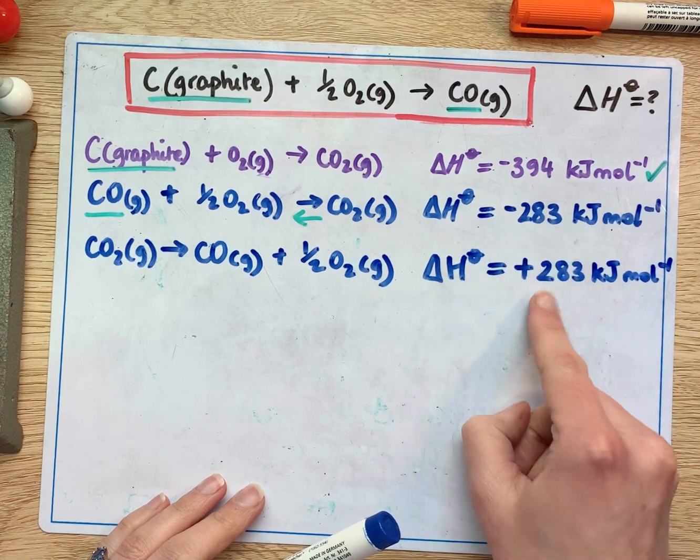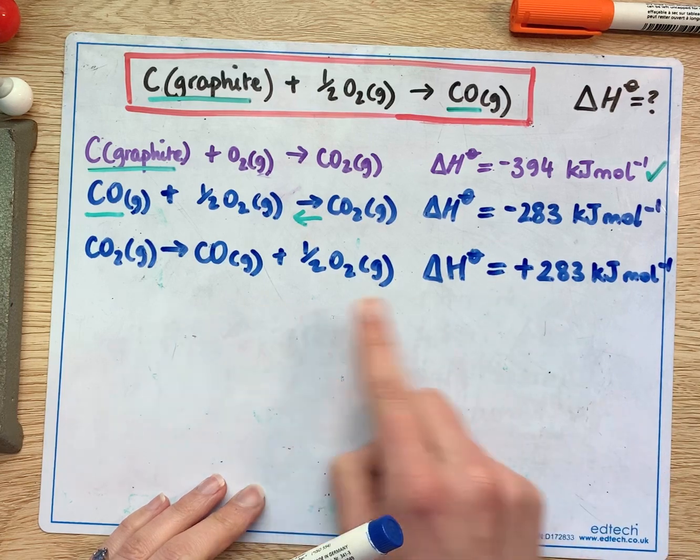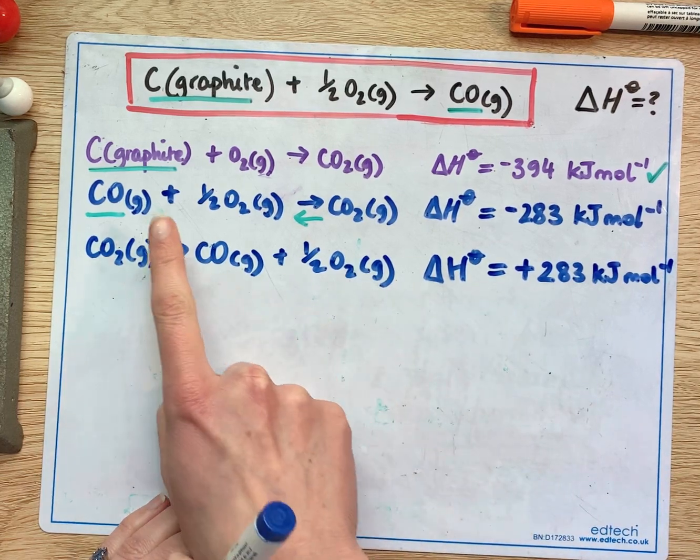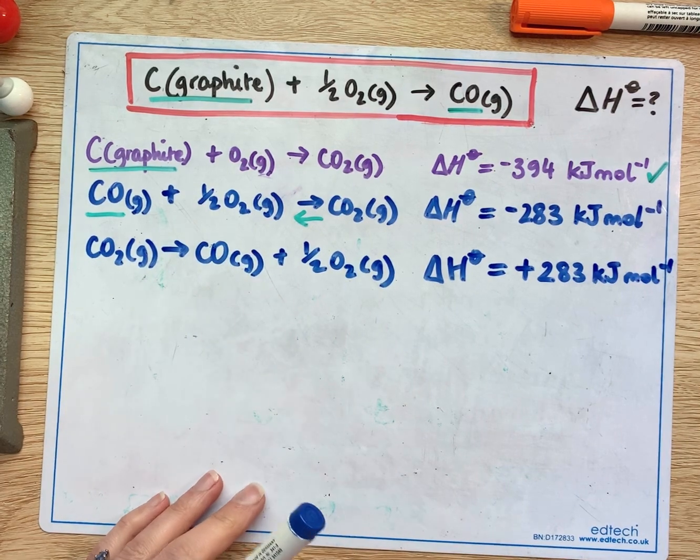So that's energy out and energy in. That's exothermic and endothermic. But otherwise we can see we have the same, we just have the reverse of the bonds being broken and formed whether we go forwards or backwards in that reaction.